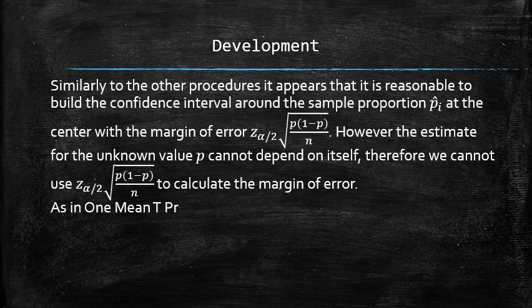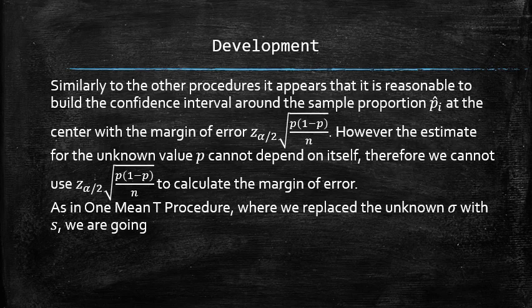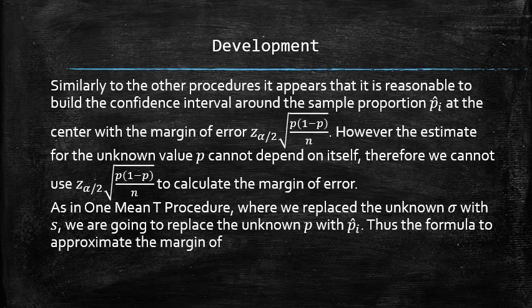As in one mean t procedure, where we replace the unknown sigma with s, we are going to replace the unknown p with p hat. Thus, the formula to approximate the margin of error is simply the following.